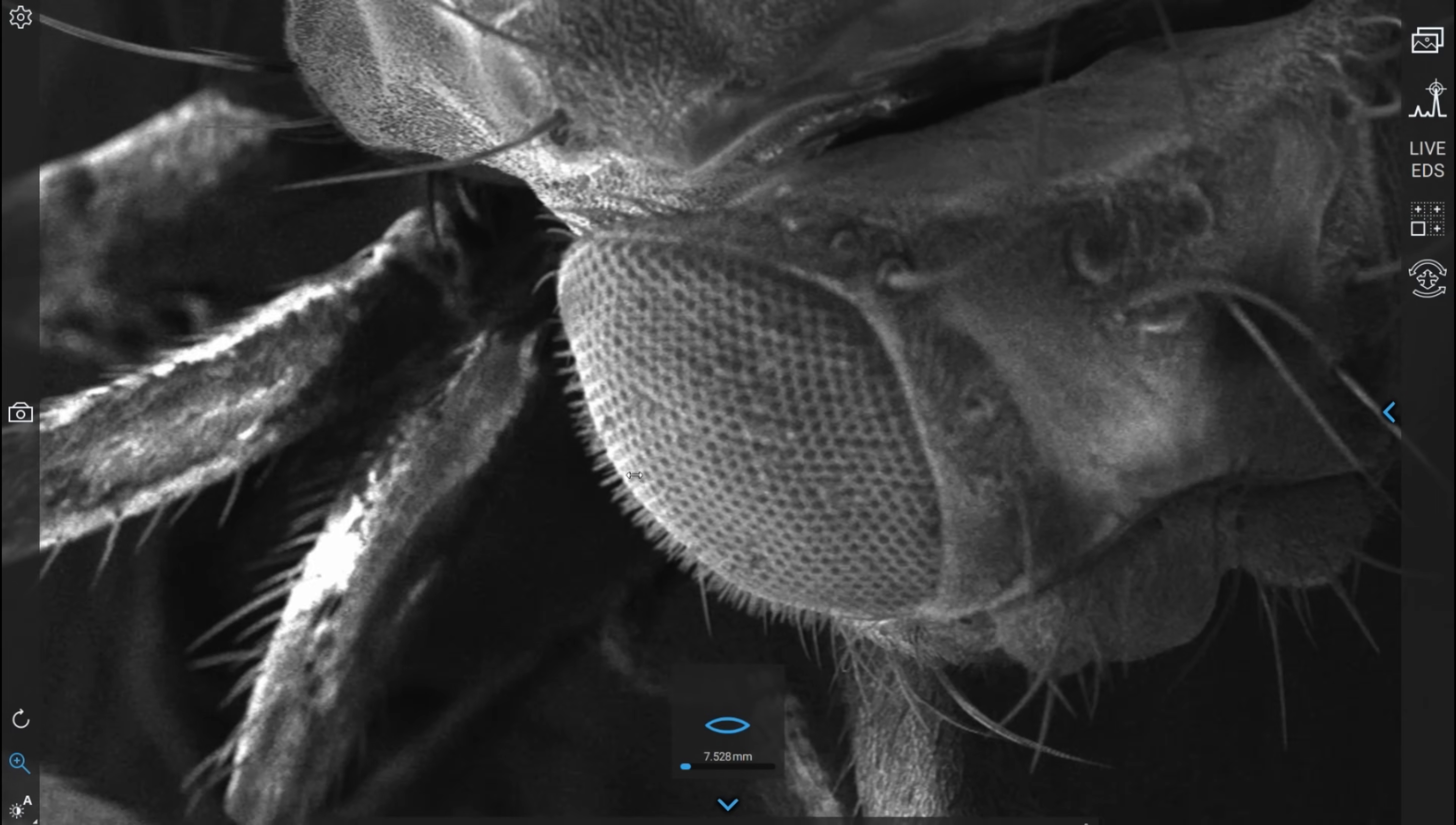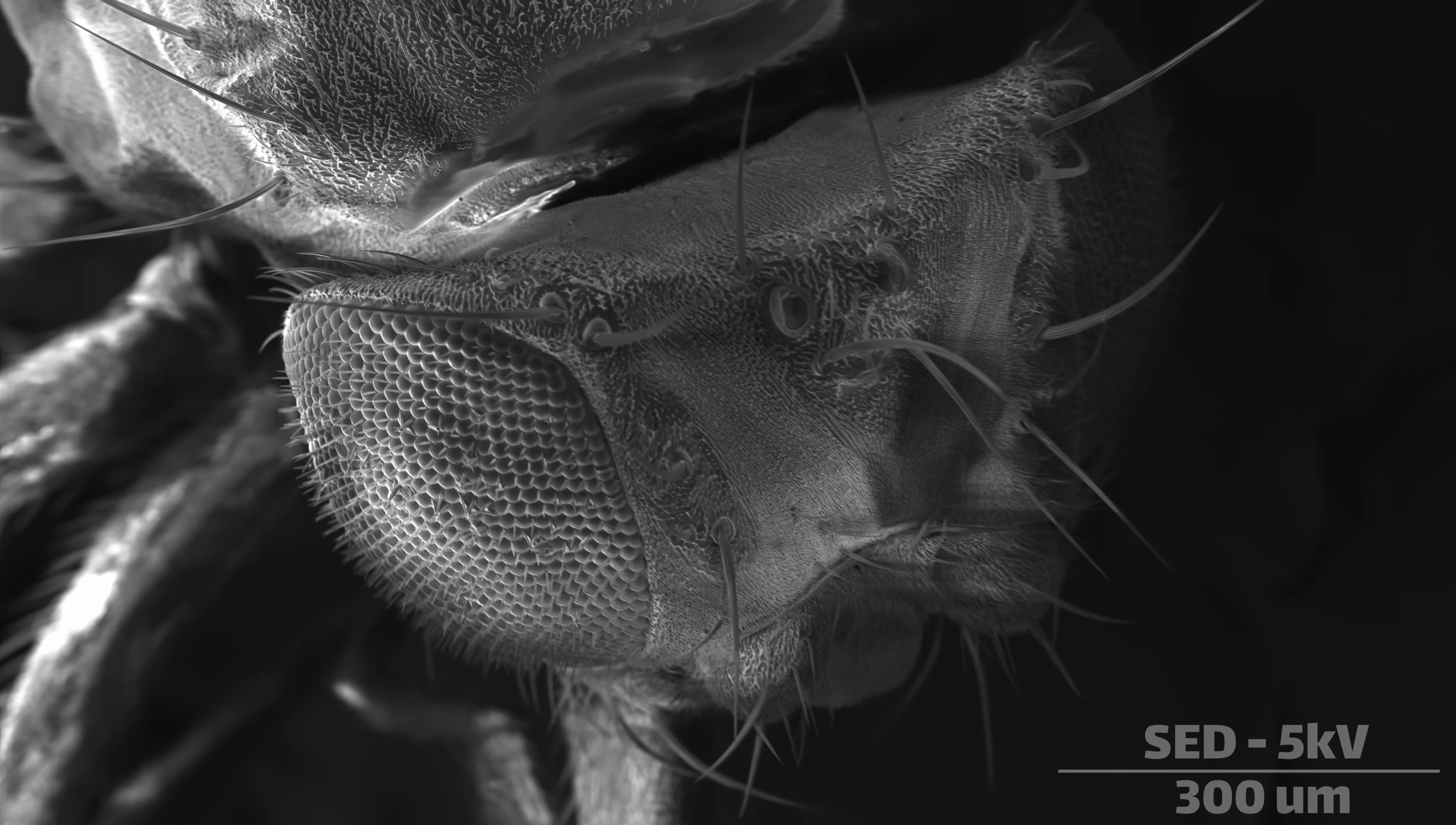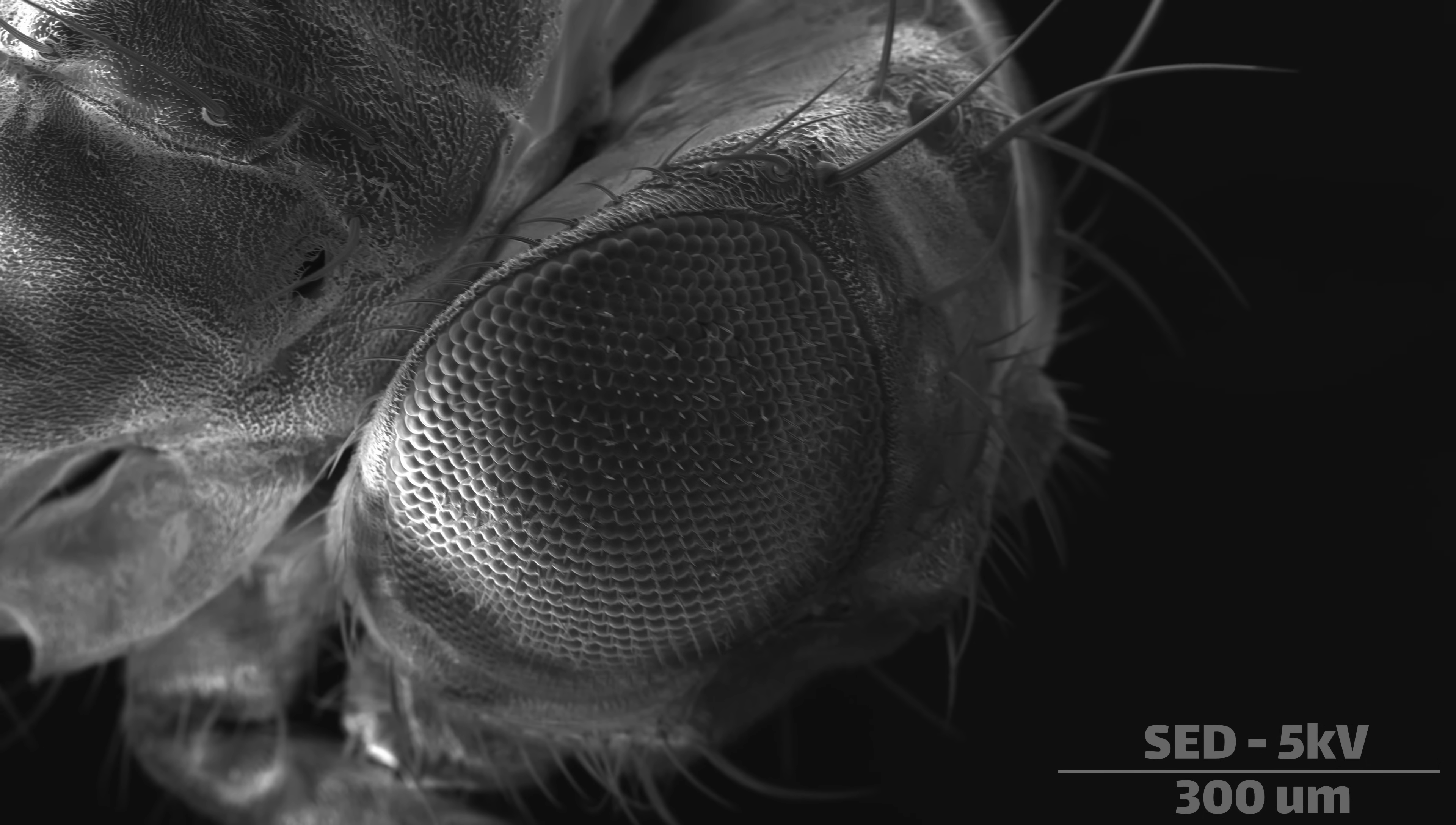Over 40% of the surface of a fruit fly is taken up by its eyes, so we'll start there. Each compound eye is composed of about 750 smaller hexagonal subunits called ommatidia. Each ommatidium has a large corneal lens on the top, which helps focus light onto photoreceptor cells underneath.